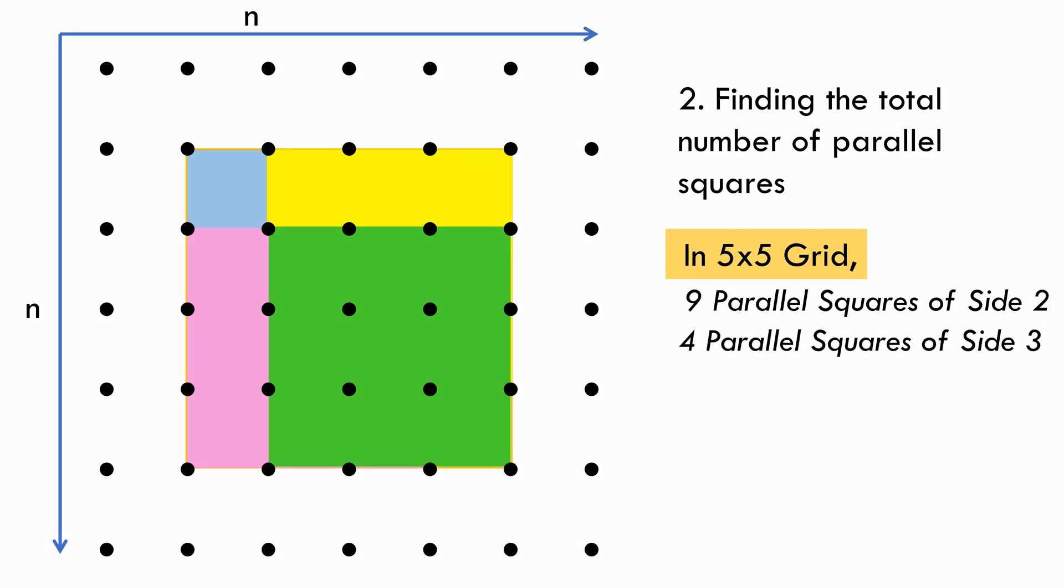From this, we can generalize that the total number of parallel squares with side s in an n by n grid will be (n minus s) whole square.